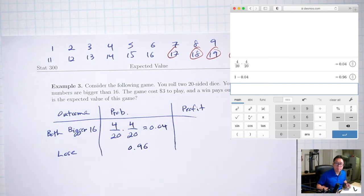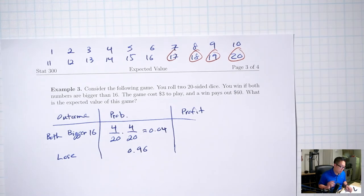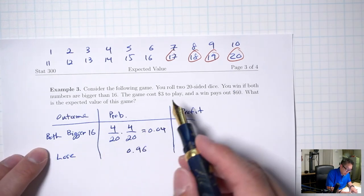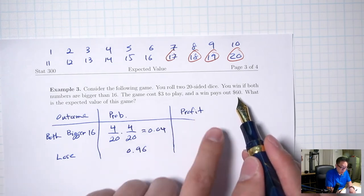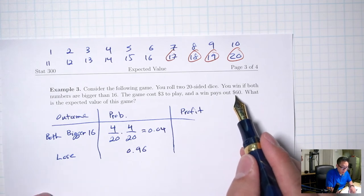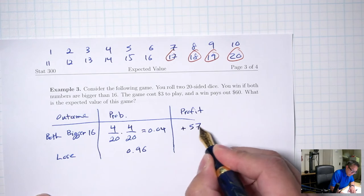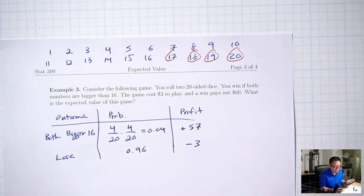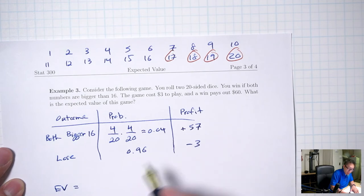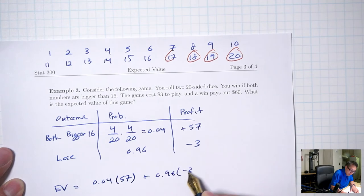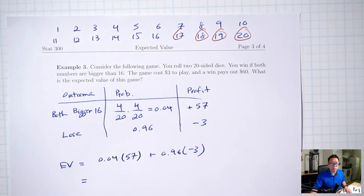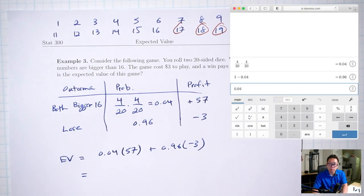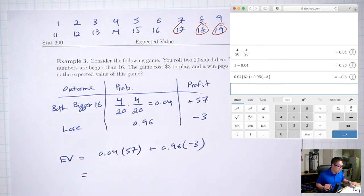Profit: if both are bigger than 16, you win $60 minus the $3 cost to play, so profit of $57. If you lose, you're down $3. Expected value: 0.04 times 57 plus 0.96 times negative 3 equals negative 0.6.